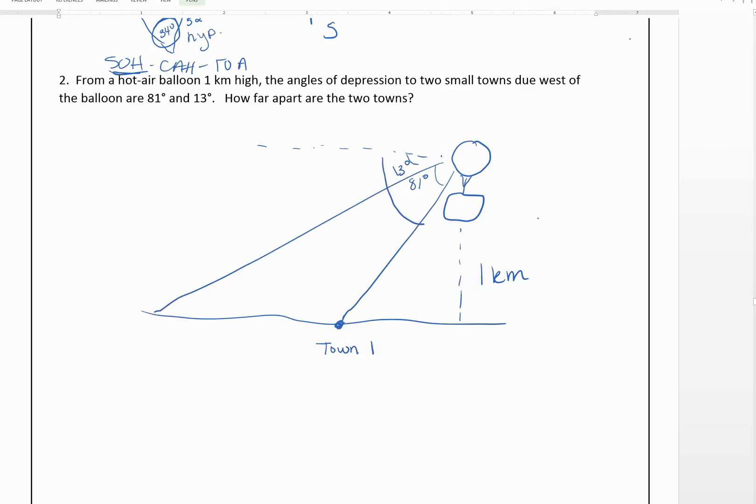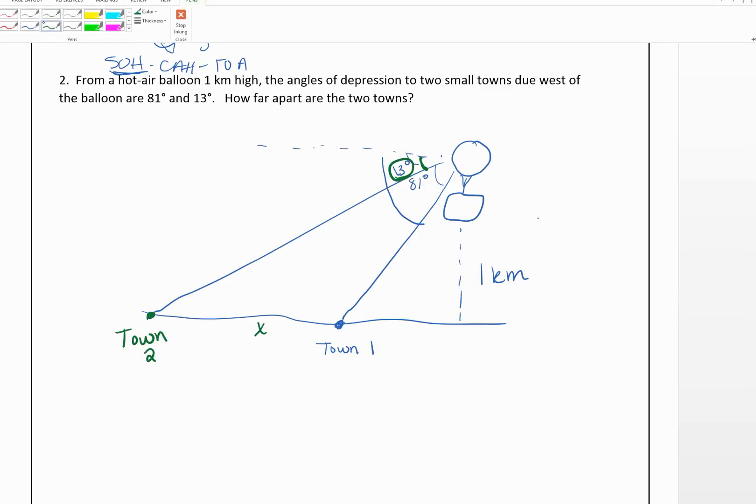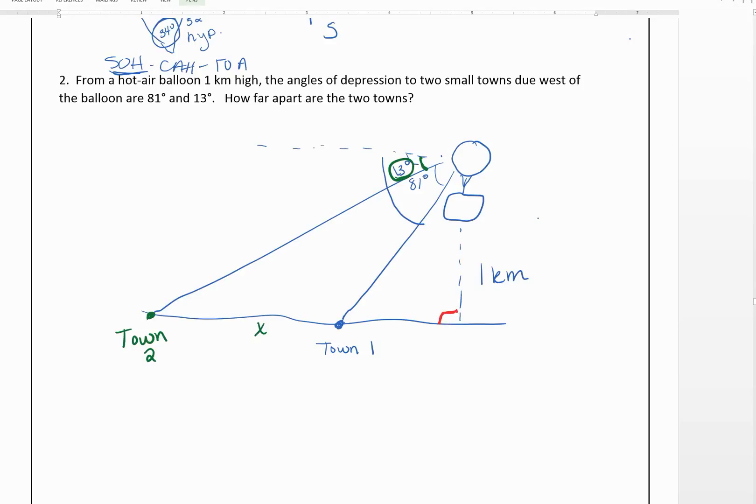So this whole thing is 81. This one is 13. And we're looking for how far apart they are. We're looking for this distance. Now, we might actually have to solve a little bit more to do this. First, we should mention that the way we're measuring this, this is a right angle. Okay, so we've got two triangles here.